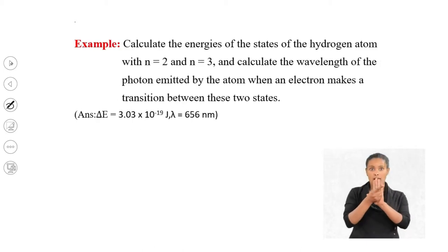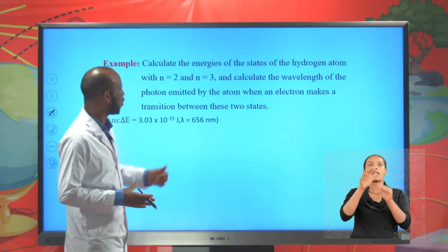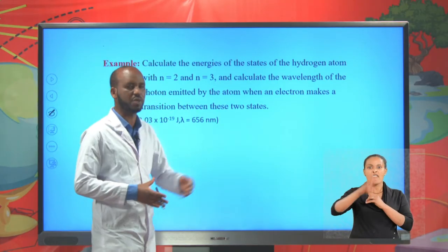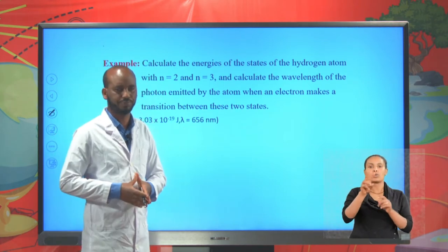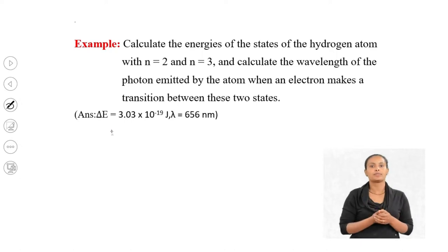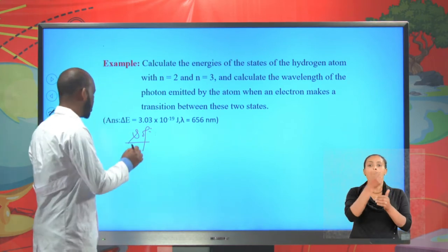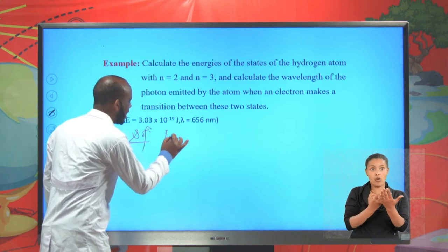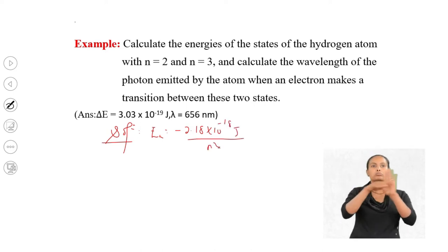Example. Calculate the energies of the states of the hydrogen atom with n = 2 and n = 3, and calculate the wavelength of a photon emitted by the atom when an electron makes a transition between these two states. We know that the energy of an electron at each orbit is calculated using the formula: En = −2.18 × 10⁻¹⁸ joules divided by n².